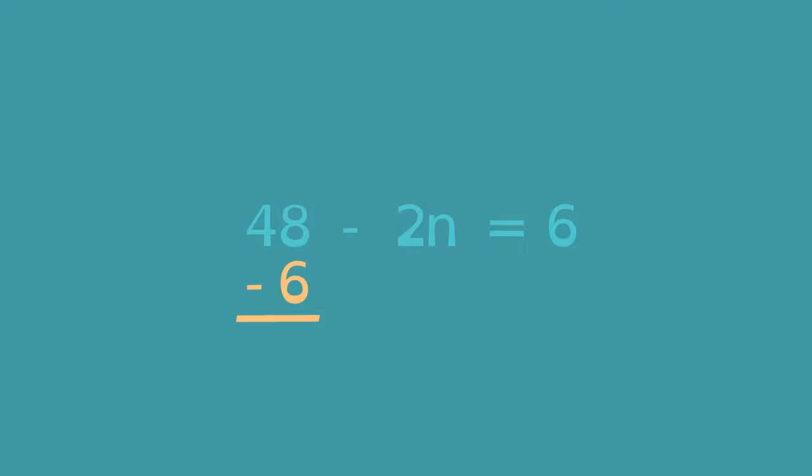48 minus 6 is 42, which means 2n is 42. Since 2 times n equals 42, 2 multiplied by something must equal 42. That something is 21, so n is 21.